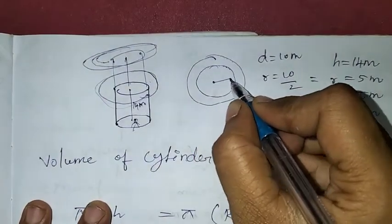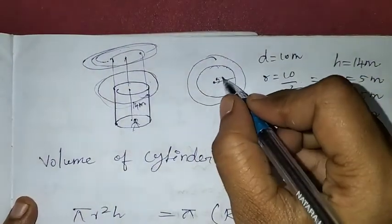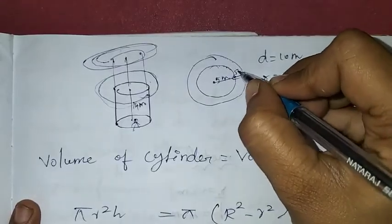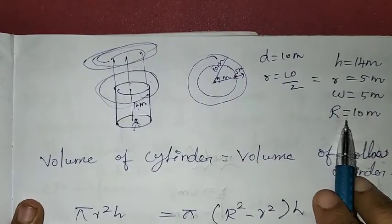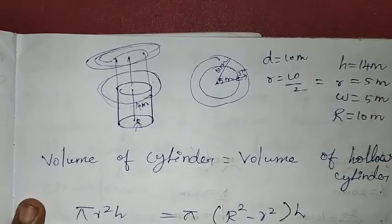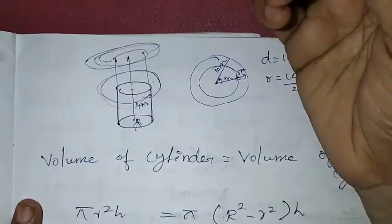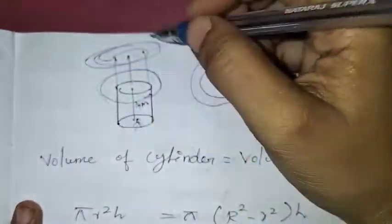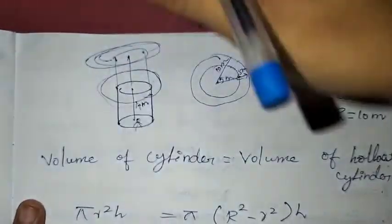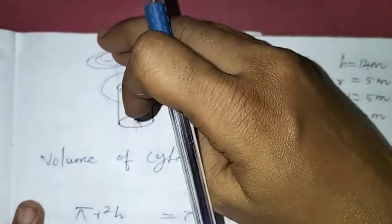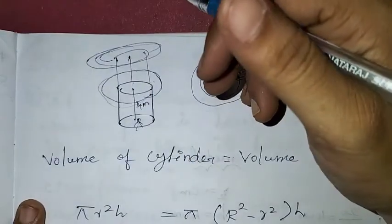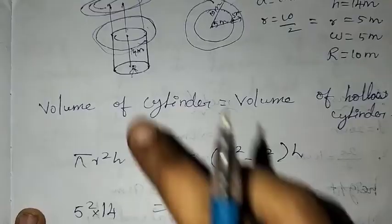The width of the embankment is 5 meters. So the outer radius is the inner radius plus the width: 5 plus 5 equals 10 meters. Now we need to find the height using volume. The volume of the cylinder equals the volume of the hollow cylinder.